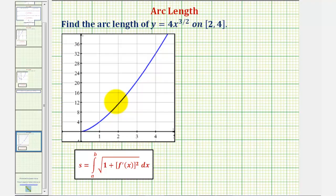Looking at the graph of the function, notice when x is 2, this would be the point on the function, and when x is 4, this would be the point on the function. So when we find the arc length of this function on this closed interval, we're determining the length of this piece of the curve.